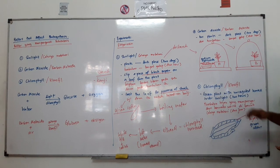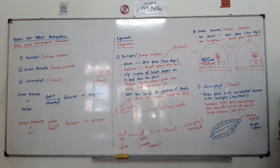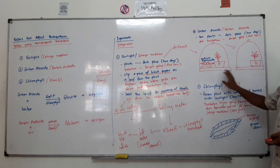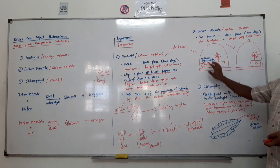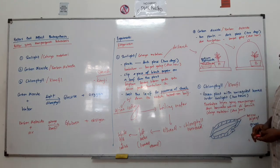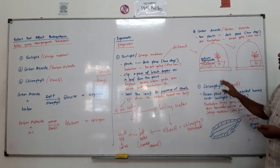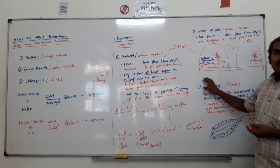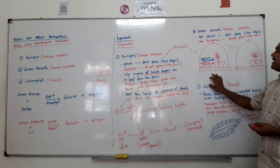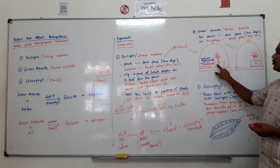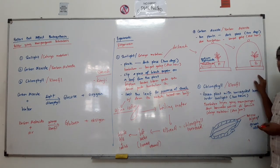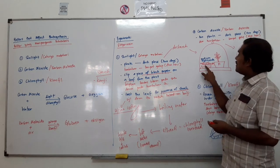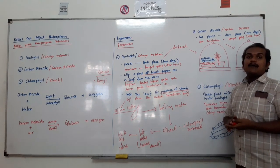In the iodine test, the leaf from plant B will give a positive result, changing to blue-black solution, confirming starch is present. This proves that carbon dioxide is essential for photosynthesis. The leaf from plant A will remain brownish-yellow, showing no starch. This concludes the carbon dioxide experiment.